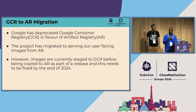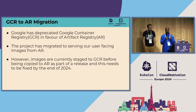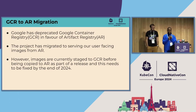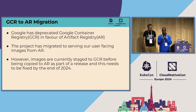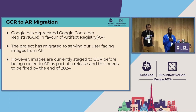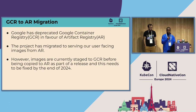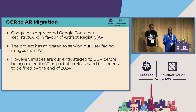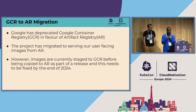GCR to Artifact Registry migration: if you're a Google Cloud customer, you may have heard GCR is deprecated — they're going to get rid of it within a year. In 2023 we adopted Artifact Registry for our production registry, so if you're pulling images from registry.k8s.io, that's already using AR. However, when we build container images, we stage them in GCR first before copying them to production for a release. That staging needs to be fixed within 12 months — ideally before the end of this year.